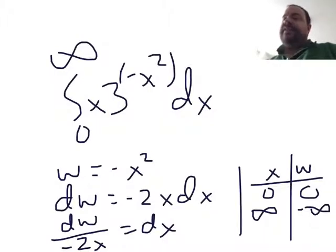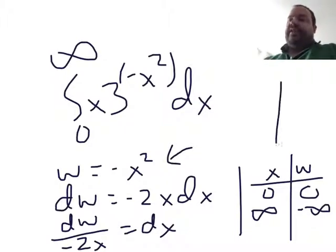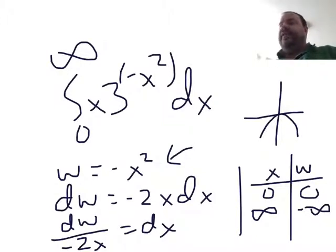I also need to change the limits. When x is 0, so is w. When x is infinity, you need to think about this like a limit. As x goes to infinity, think about this substitution. The substitution is, if w is the y and x is the x, it's this guy. So as x goes to infinity, those y values, or those w values, are going to minus infinity. So that's how I got minus infinity here.